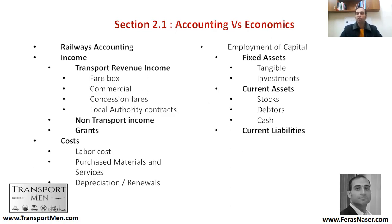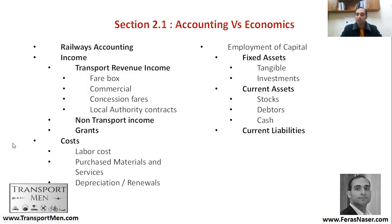For railway accounting, there is income and there are costs. Income includes transport revenue — farebox income, commercial income, tickets, advertising on trains or stations, concession fares, and local authority contracts — plus subsidies, non-transport income, and grants. On the cost side, there are labor costs for drivers, maintenance workers, and engineers; purchased materials and services such as materials and equipment; and depreciation and renewals. This gives you a basic understanding of income coming into your railway organization and its costs.